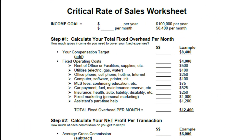In your success training system guide you want to turn to the page that is the critical rate of sales worksheet. The critical rate of sales worksheet is a simple way for you to find out what your fixed costs are, your variable costs, and how much money you net per transaction that you do, whether it's a listing or a buyer.